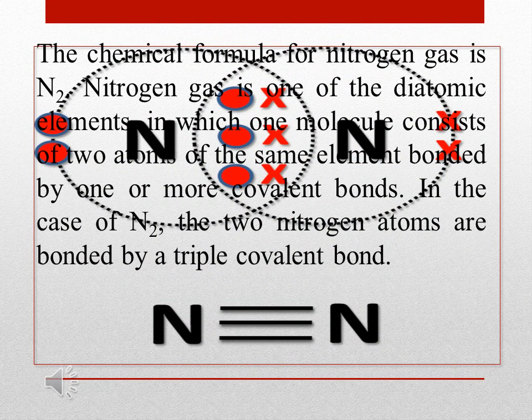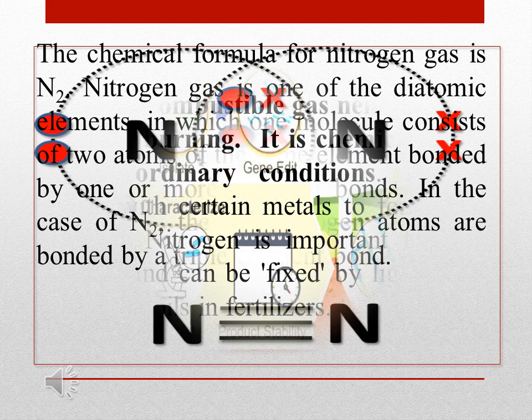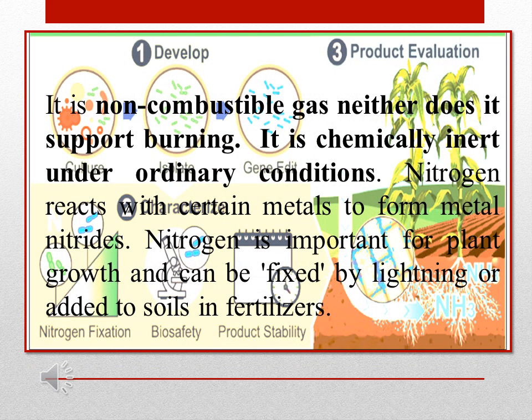The chemical formula for nitrogen gas is N2. Nitrogen gas is one of the diatomic elements — two atoms of the same element bonded by one or more covalent bonds. In the case of N2, the two nitrogen atoms are bonded by a triple covalent bond. It is a non-combustible gas and neither does it support burning. It is chemically inert under ordinary conditions. Nitrogen reacts with certain metals to form metal nitrides, and it is important for plant growth and can be fixed by lightning.